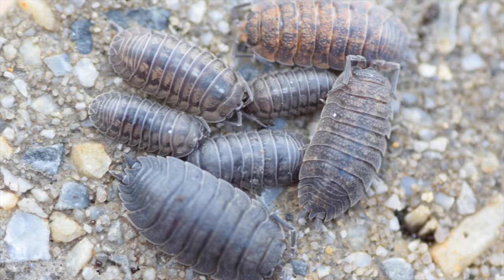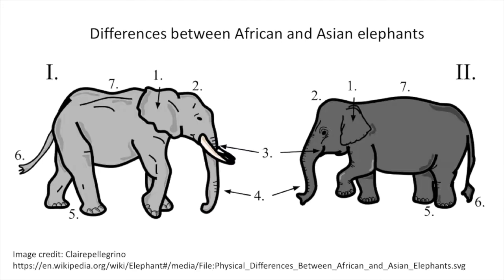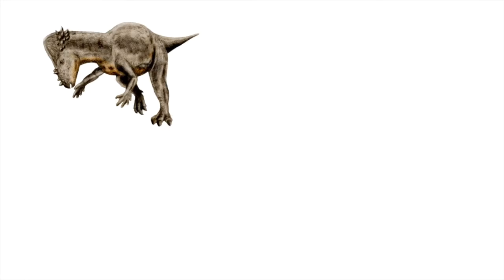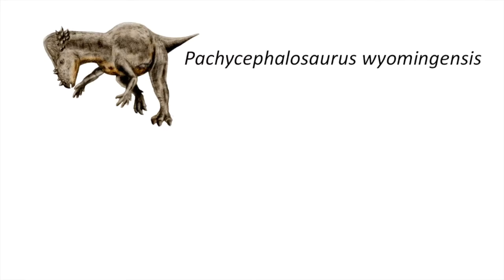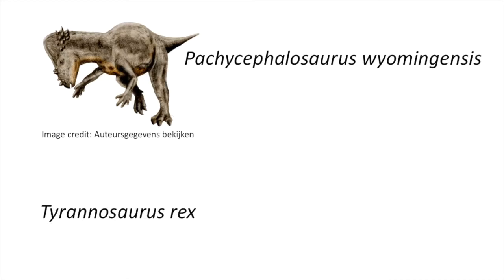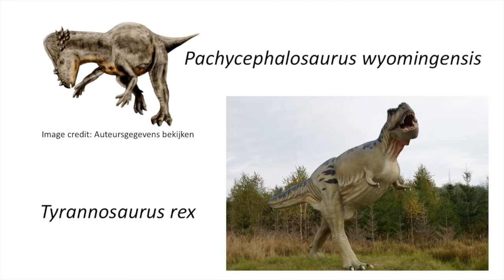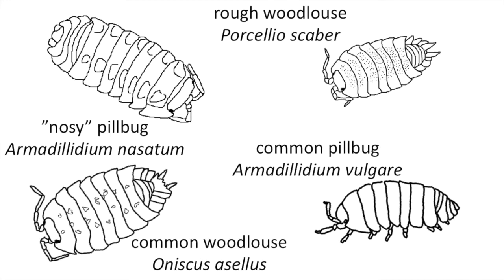With a little practice, students can distinguish between different species of isopod. I've included both scientific and common names. Students don't have huge trouble with scientific names — Pachycephalosaurus wyomingensis, Tyrannosaurus rex — many dinosaurs are only known by their scientific names. Children don't shy away from big dinosaur names, and neither should they shy away from scientific names for animals alive today.